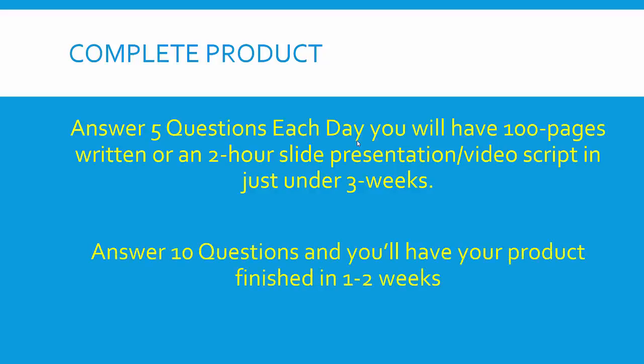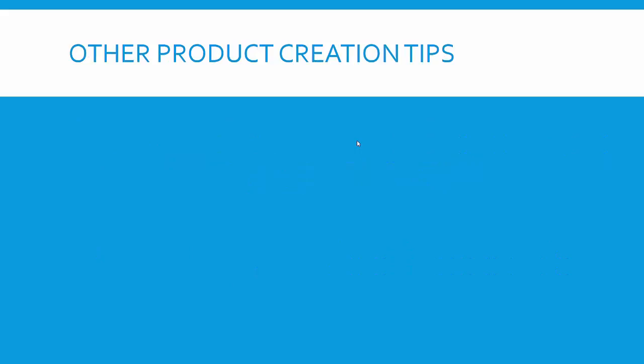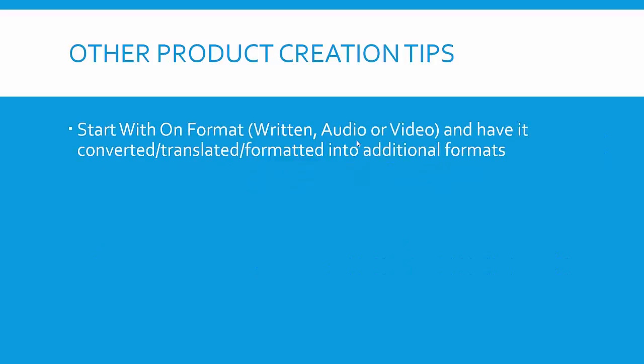With eight to ten sections like that, you've got yourself a really decent-sized ebook, physical book, or course. Convert that into PowerPoint slides or read it as audio, add value content, and you've got yourself a two to three hour audio or video program. Breaking it down further: answer five questions each day and you'll have a hundred-page written product or two-hour slide presentation video script in just under three weeks. You can write a page per question answer in about an hour a day — you can do that while working a job you hate. Answer ten questions on weekends or at lunch, and you'll have your product finished in one to two weeks.